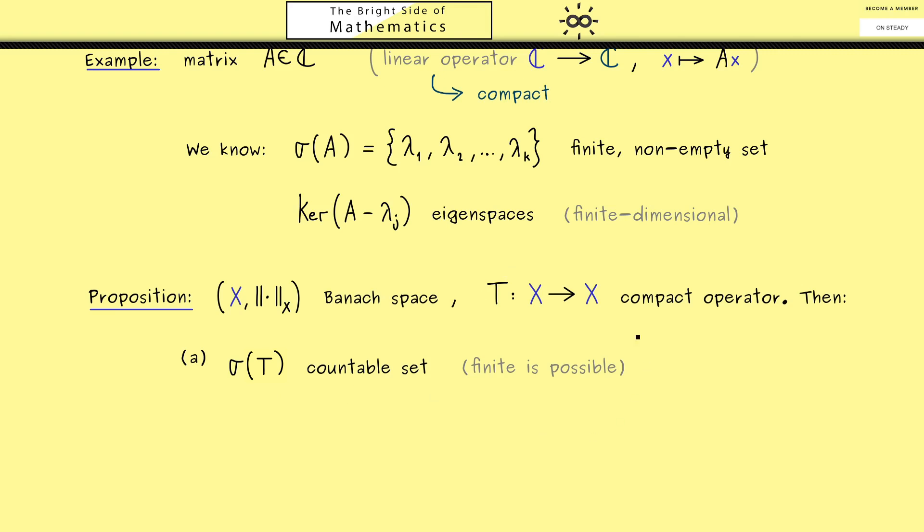This can even happen in the case that X is an infinite dimensional space. However in this case something special happens for compact operators. More precisely we know that we have infinitely many directions that are sent to one compact set and this implies that 0 is always an element of the spectrum. So this is what you can remember and you see it's a difference from the finite dimensional case.